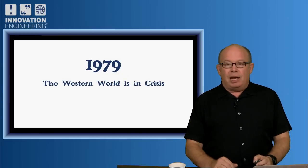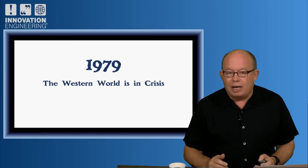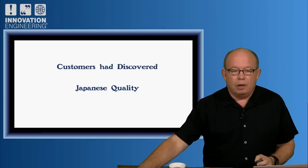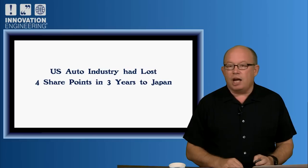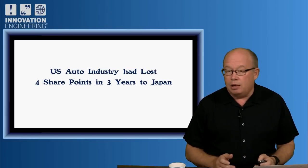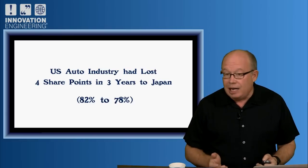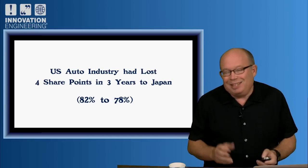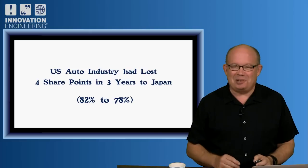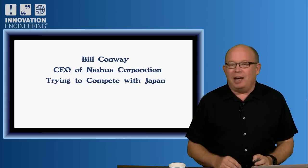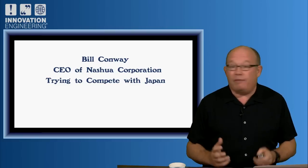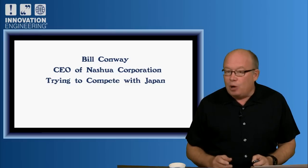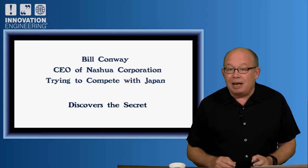The year is 1979. The Western world is in crisis. Customers had discovered Japanese quality. The U.S. auto industry had lost four share points in just three years to Japan, going from 82% to 78%. Bill Conway, CEO of National Corporation, is trying to compete in Japan and having a real challenge. But on a trip there in spring of 1979, he discovers the secret.